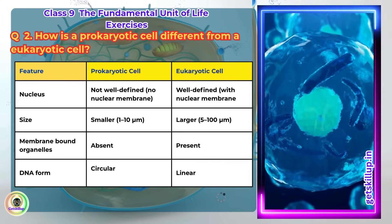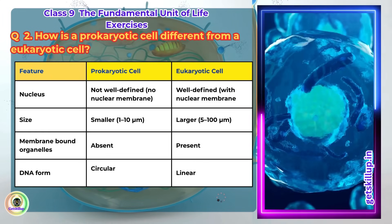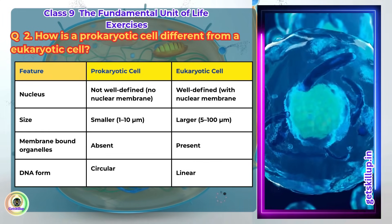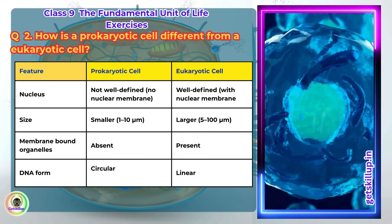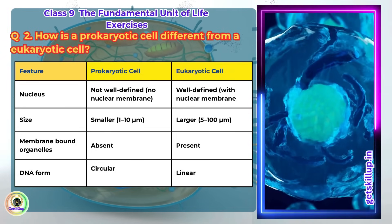No nuclear membrane. Size is smaller. Membrane-bound organelles is absent. DNA form is circular.